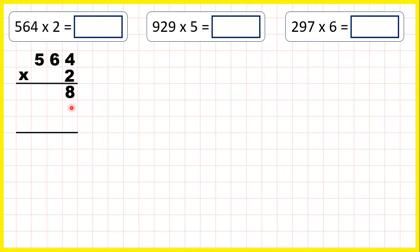Now we can move on to our second answer line, but it's really important that we remember to write a zero in the ones digit of our second answer line. That's because we're now going to multiply by this six, but this six is in our tens place, so we need a zero in our ones. Now six times two is twelve.